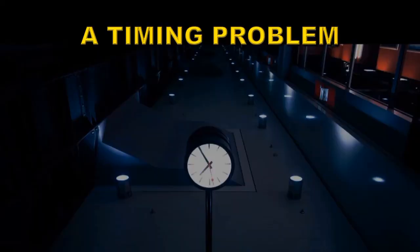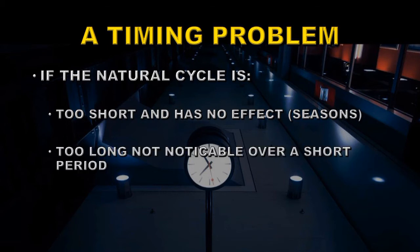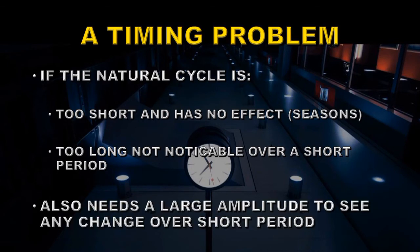The natural cycle explanation has a timing problem. If the natural cycle is too short, it will have no effect over the period of time that we've been observing — an example of this is the seasons. If the period of the natural cycle is too long, then we're not going to get a noticeable effect over a short period of time, unless there's a very large amplitude change as part of that natural cycle, and that generally is not the case.